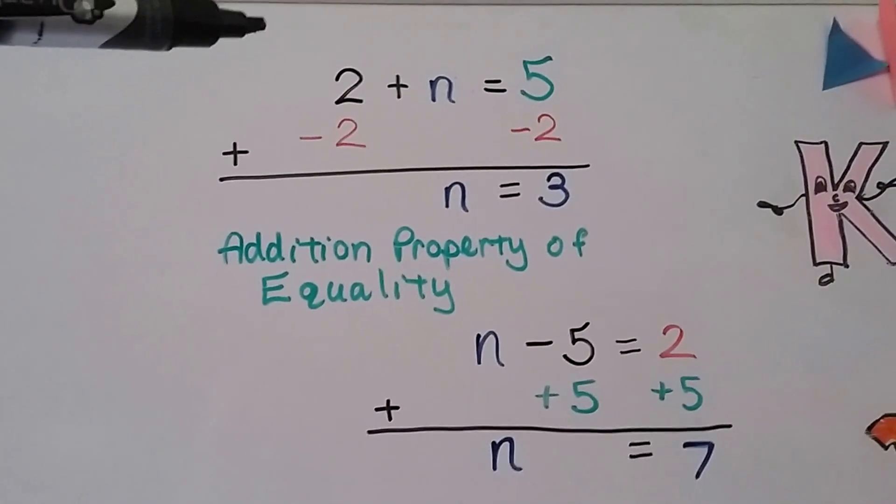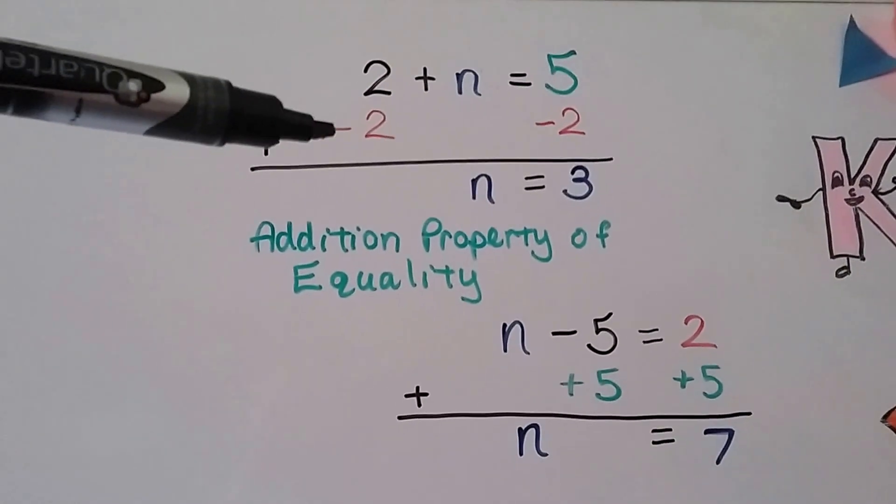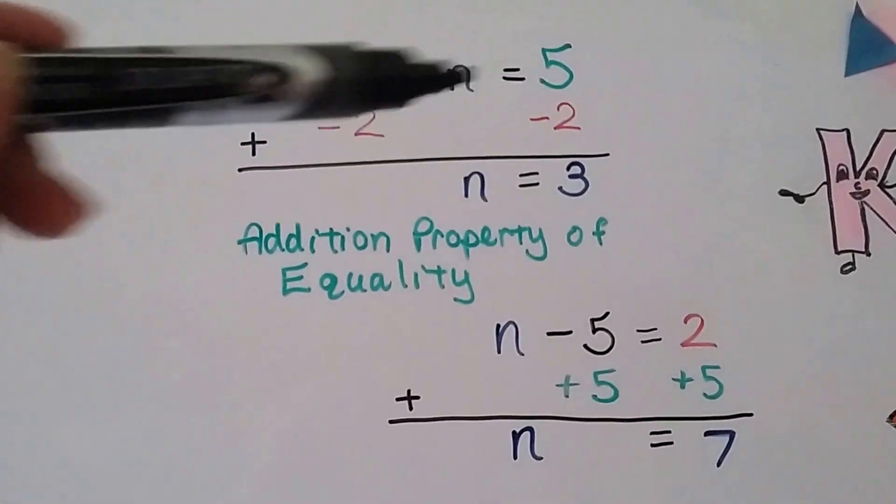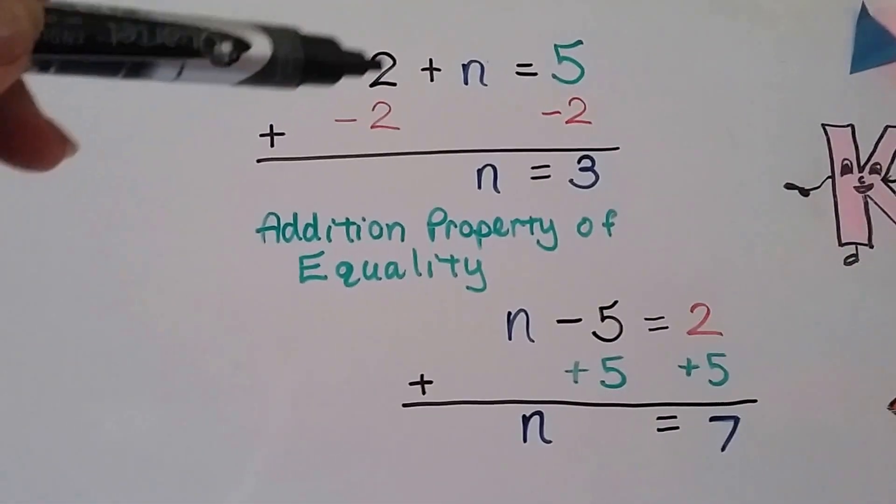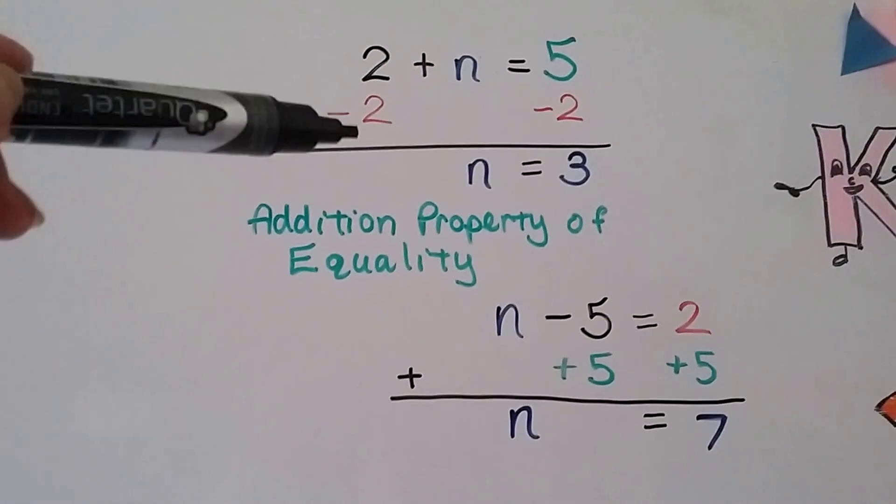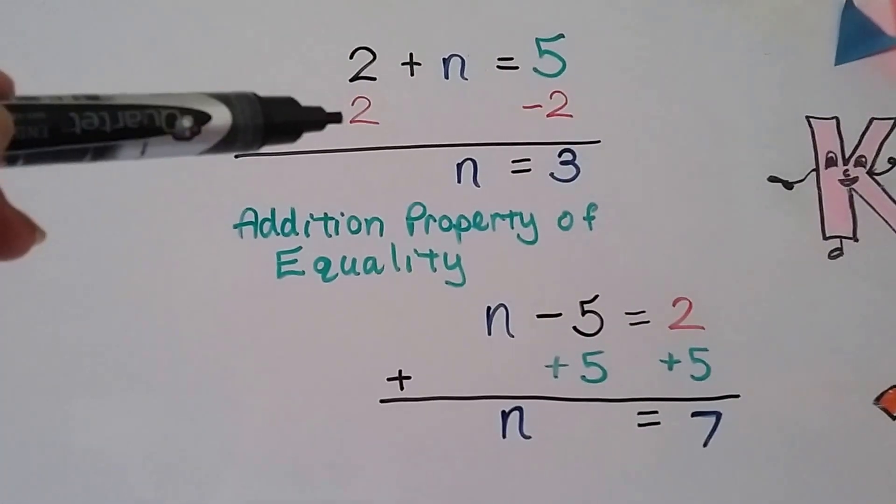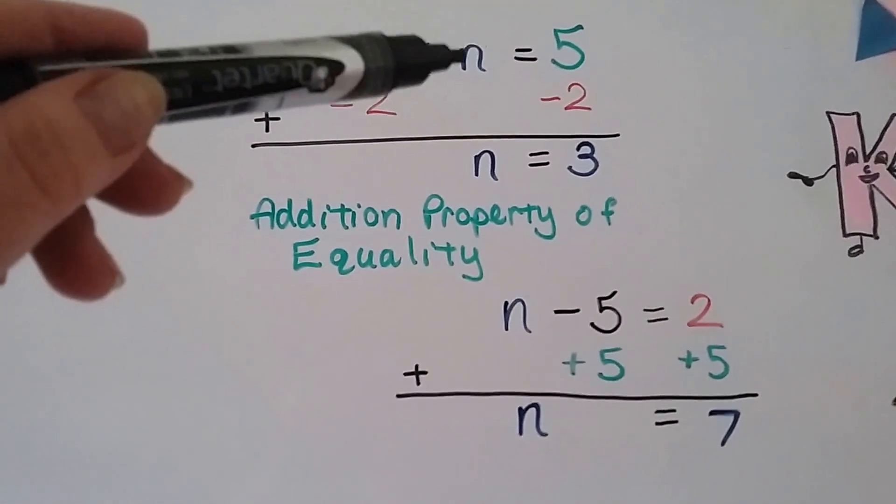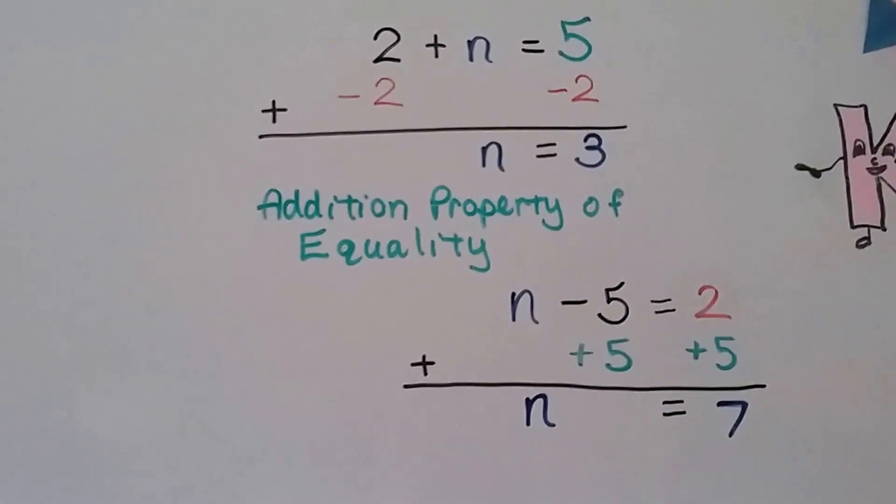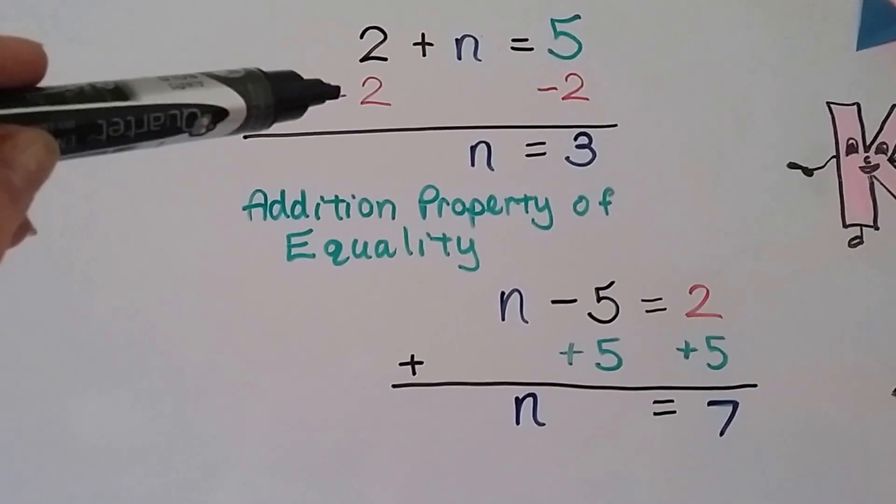If we have 2 plus n equals 5, we add a negative 2 to each side of the equation. So whatever number is next to the variable, that's the one that we use to get rid of. Alright? Because we're trying to isolate and get that variable all to itself.